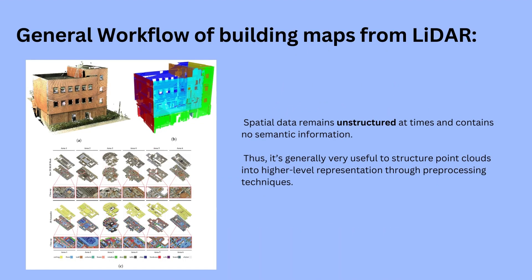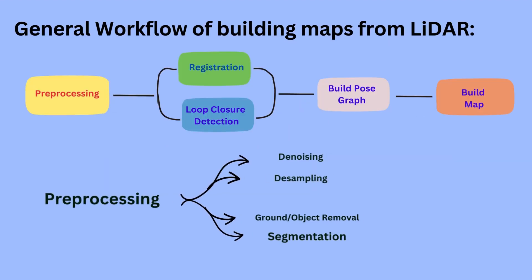Point cloud data are made up of 3D coordinate systems of surfaces, as we discovered in our last video. These data points aim to describe the real world around us; however, the spatial data remains unstructured at times and contains no semantic information. Thus it's generally very useful to structure point clouds into higher-level representations through pre-processing techniques.